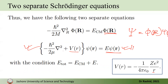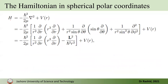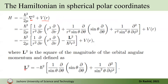We want to solve the relative motion equation, which is what we are actually interested in. The Hamiltonian here has a kinetic energy term and the potential. If we write ∇² in spherical polar coordinates we get a long expression: the radially dependent part and the angle-dependent part divided by r². We recognize this angle-dependent part as the angular momentum operator squared L², and rearrange to replace it accordingly.